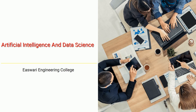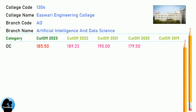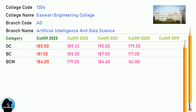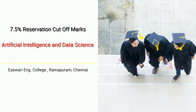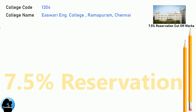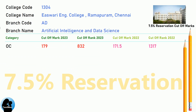DNA Cut-Off for Eshwari Engineering College in Artificial Intelligence and Data Science. DNA 7.5 Reservation Cut-Off for Eshwari Engineering College in Artificial Intelligence and Data Science.